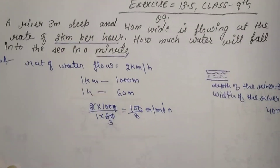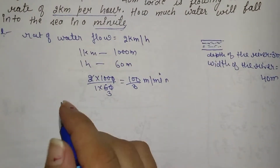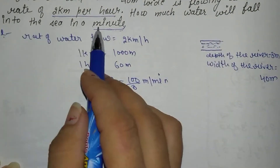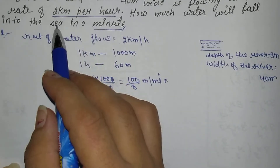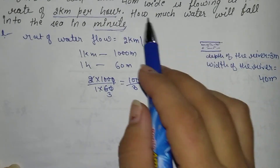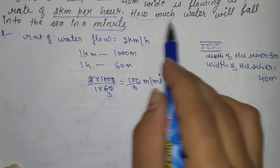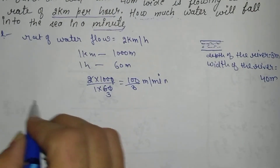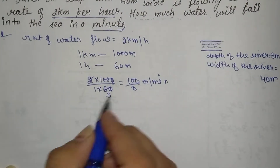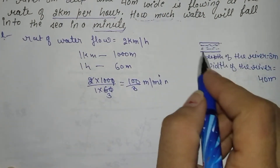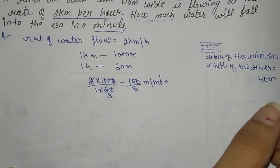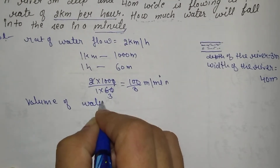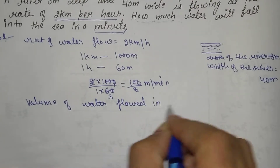Now, to solve the question further, depth is given and width is given. We need to find out how much water will fall into the sea in a minute. For that, we will find the volume using length into width into depth.